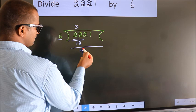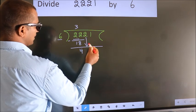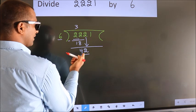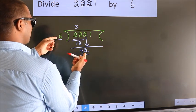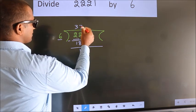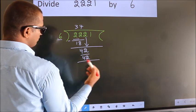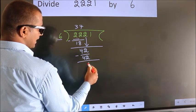After this, bring down the beside number. So 2 down, so 42. When do we get 42 in 6 table? 6 sevenths, 42. Now we subtract. We get 0.